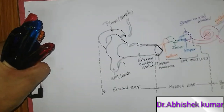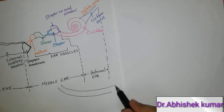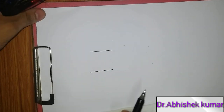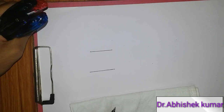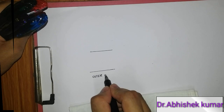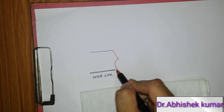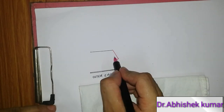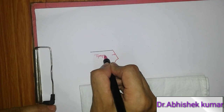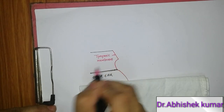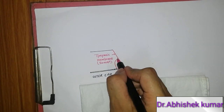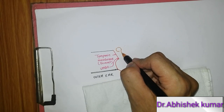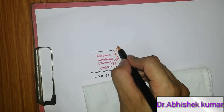In this diagram we will draw the middle ear along with some part of the external and internal ear. I am drawing a parallel line showing the external auditory meatus, which represents the external ear. This is the tympanic membrane, which is about 50 square millimeters. It is made up of collagen and elastic fibers. The inner surface is lined by mucous membrane and the outer surface is lined by skin. The apex of the tympanic membrane is called the umbo.